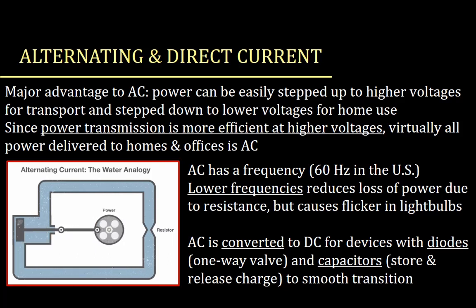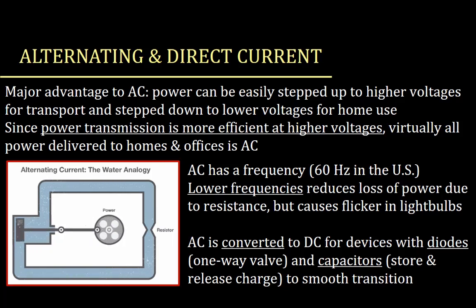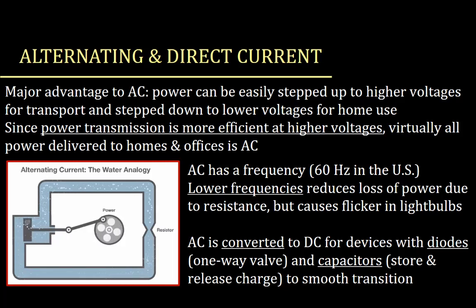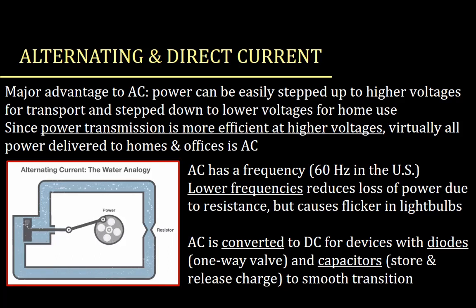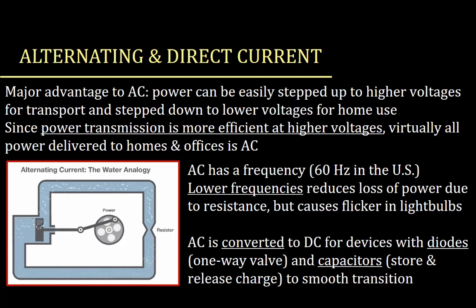AC is converted to DC for use in devices with what are called diodes — we'll look at some LEDs in our lab this week. Diodes are essentially one-way valves. You can also use capacitors, which store and release energy, to smooth the transition so you get a constant flow of energy to the device. Ultimately, we're trying to find a balance between frequencies that are too high and too low.